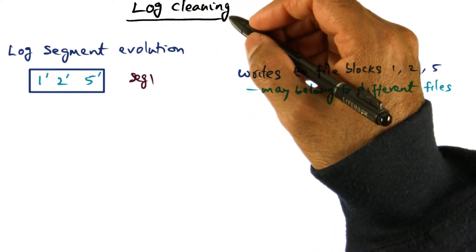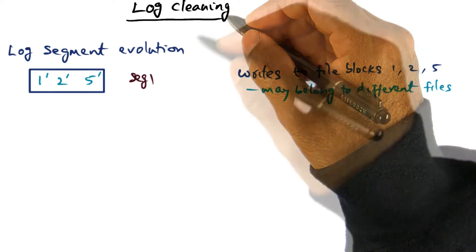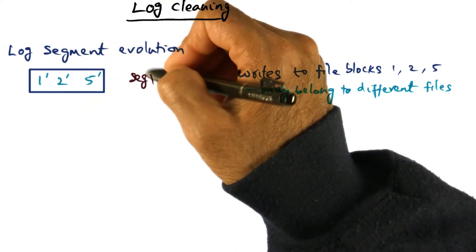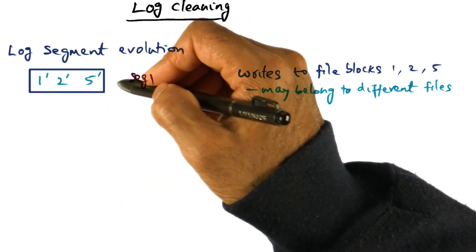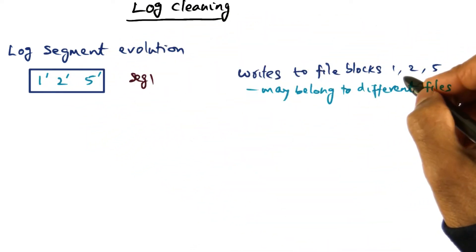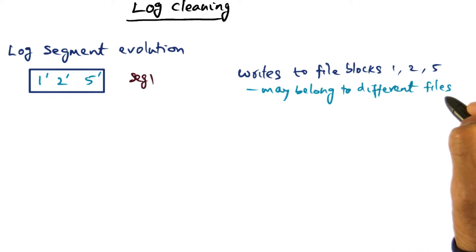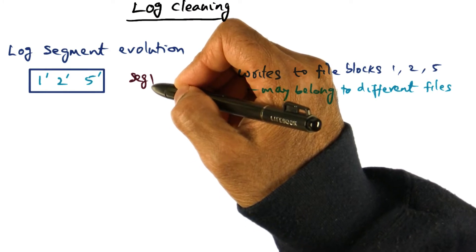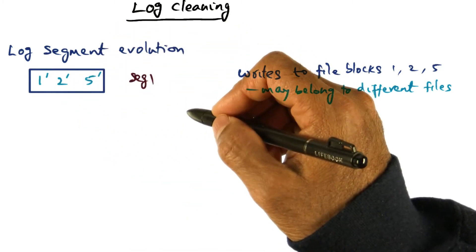Log cleaning has to be done as client activities progress and log segments evolve on disk. For instance, on a particular client node, some blocks are written to a log segment until it fills up. The blocks contained in this log segment correspond to writes to file blocks one, two, and five. These file blocks may belong to different files, but as far as the file system is concerned, segment one is a contiguous file — a log segment, but still a file.